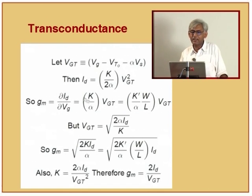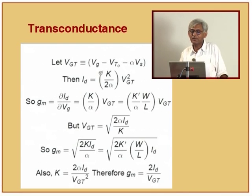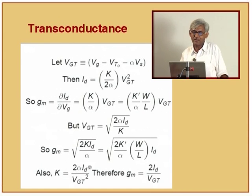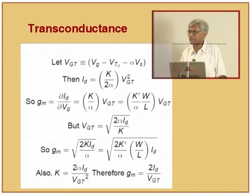The third way is to eliminate k. From the defining equation, k equals 2*ID/VGT squared. Substituting this into the gm equation: gm equals (2*ID/VGT squared) times VGT, giving gm equals 2*ID/VGT. So I have created three separate equations for gm: in terms of ID, or VGT, or k. All these equations are derived from each other and must be consistent.